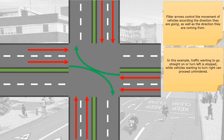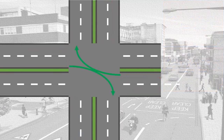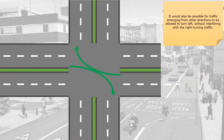In this example, traffic wanting to go straight on or turn left is stopped, while vehicles wanting to turn right can proceed unhindered. It would also be possible for traffic emerging from other directions to be allowed to turn left without interfering with the right-turning traffic.